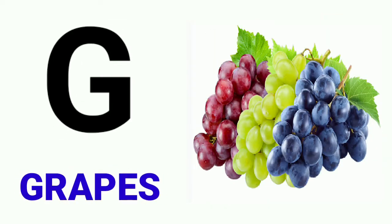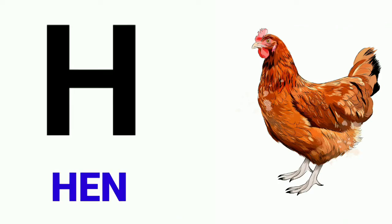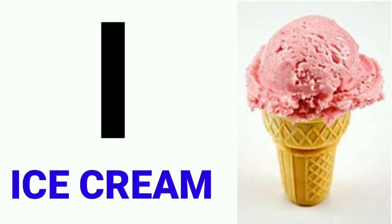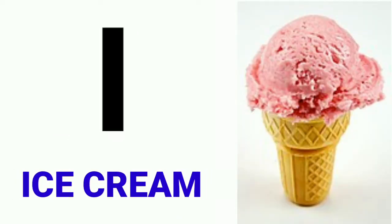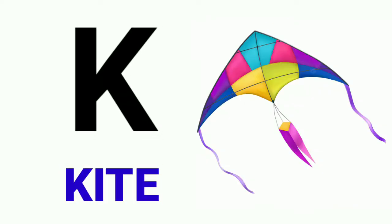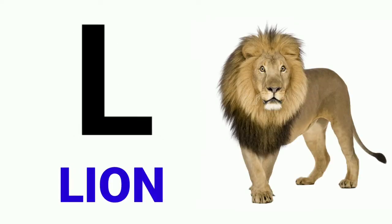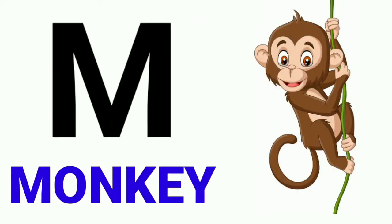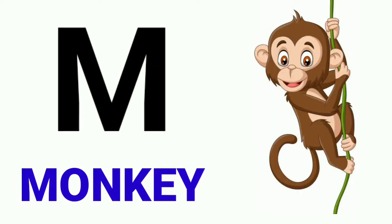G for grapes, H for hen, I for ice cream, J for jug, K for kite, L for lion, M for monkey.